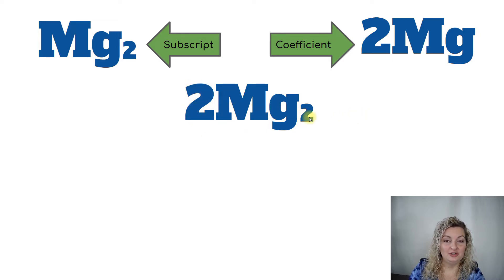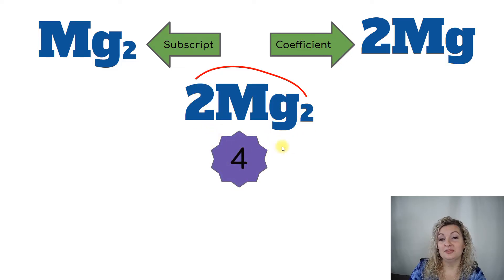So now we have 2Mg2. Well, what you really have to do is use a distributive property, and you're going to distribute your coefficient to your subscript, and you're going to multiply. So it's 2 times the 2. So really, right here, I have 4 atoms of magnesium.